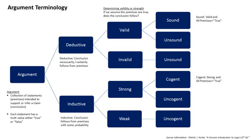A classical example of an incorrect inductive argument was presented by John Vickers: All of the swans we have seen are white. Therefore, we know that all swans are white. The correct conclusion would be: We expect that all swans are white. The definition of inductive reasoning described in this article excludes mathematical induction, which is a form of deductive reasoning that is used to strictly prove properties of recursively defined sets. The deductive nature of mathematical induction is based on the non-finite number of cases involved, in contrast with the finite number of cases involved in an enumerative induction procedure like proof-by-exhaustion.